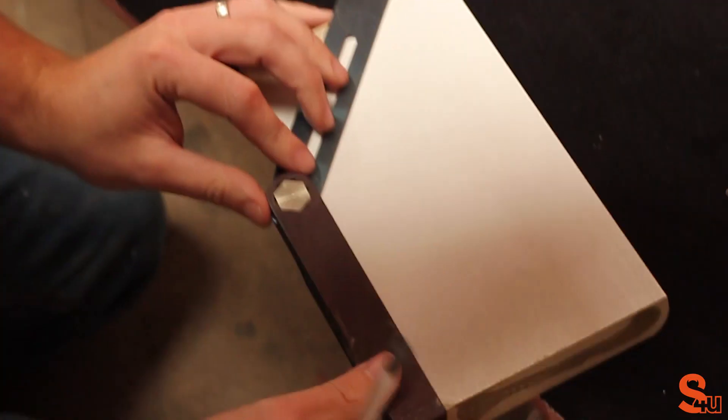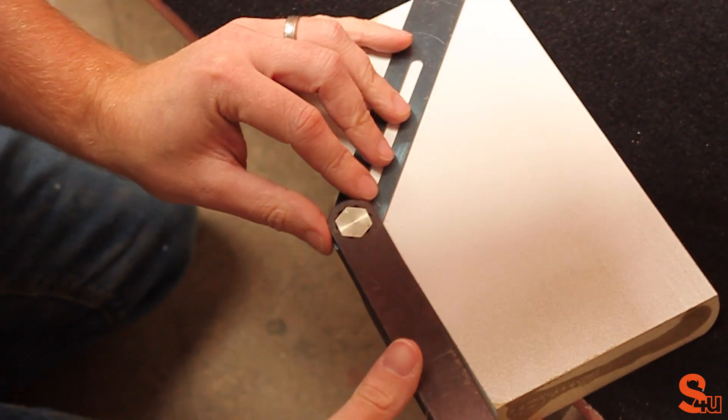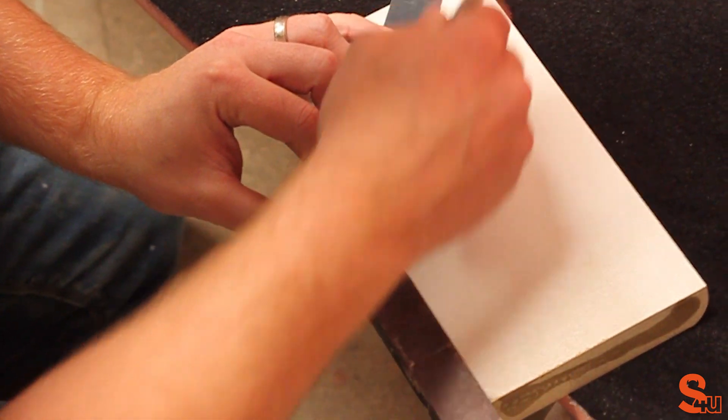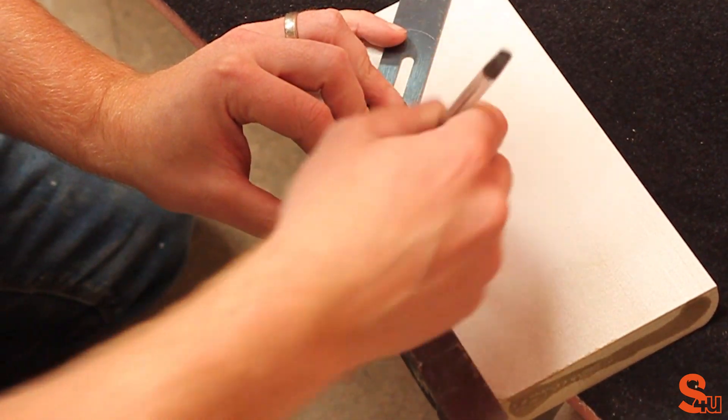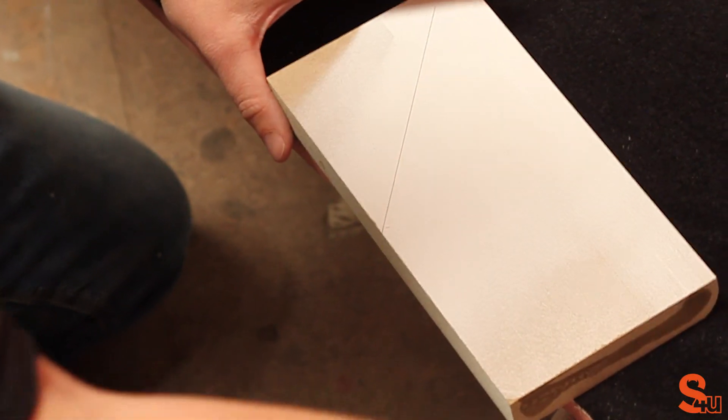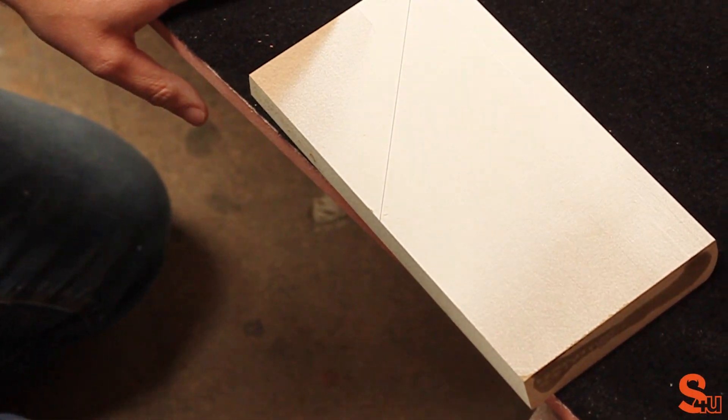Using either a scrap piece of board or the back of a piece of skateboard, mark out the angle onto the back.